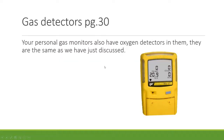Personal gas monitors also contain oxygen detectors — they are the same galvanic or polarographic sensors discussed, just in a much smaller form.